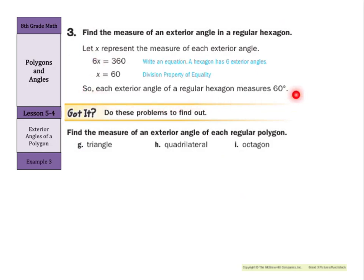Now let's use that to help us with triangles, quadrilaterals, and octagons. Well, for our triangle there's three sides, so we could say 3x = 360 degrees. And if I choose to divide by 3 here on both sides, x is going to be 120 degrees. So each exterior angle in a triangle is 120 degrees.